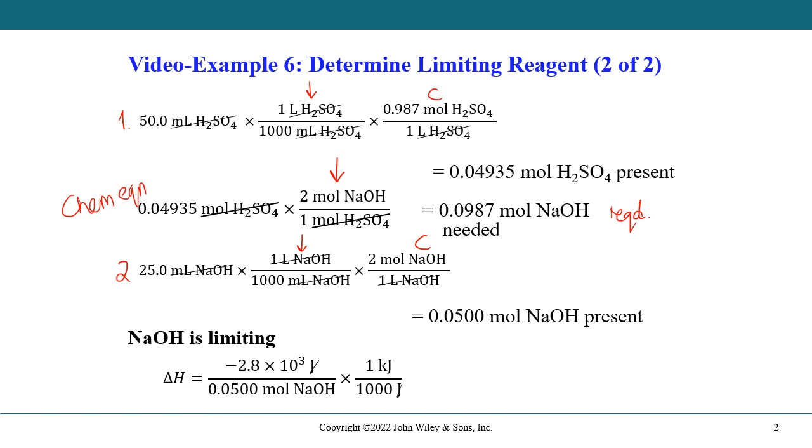So using then this number of moles of sodium hydroxide that's actually present, and the heat that we calculated in the previous slide. So this is the Q value. Remember, this is the equation that I've mentioned to you before: delta H is equal to Q over N. So we have the heat value for the reaction divided by the number of moles, and then converting to kilojoules. And we end up with a value of negative 56 kilojoules per mole for this chemical reaction.